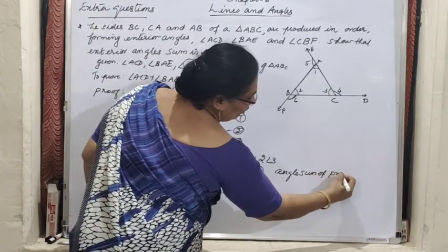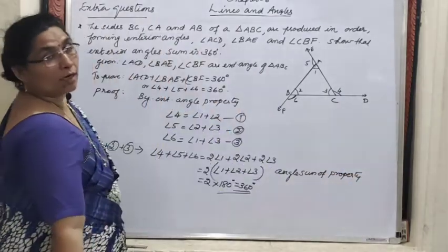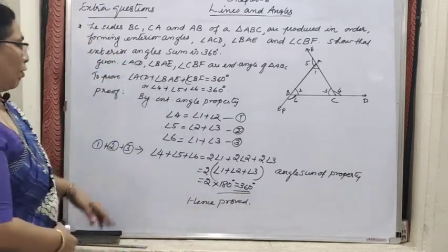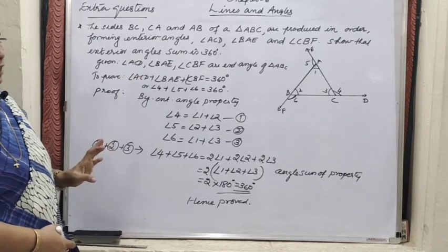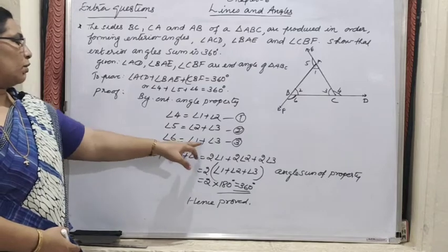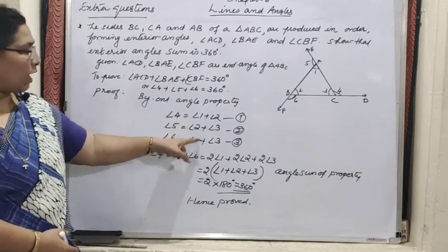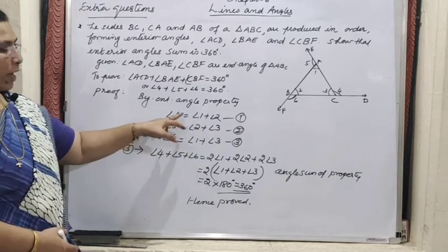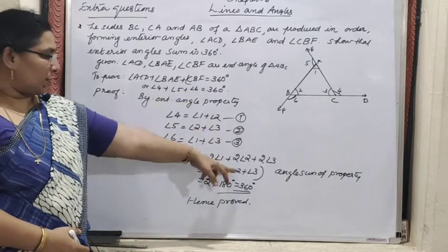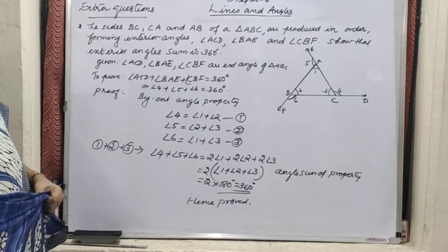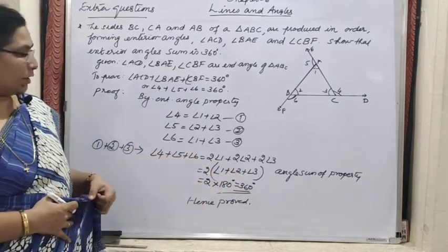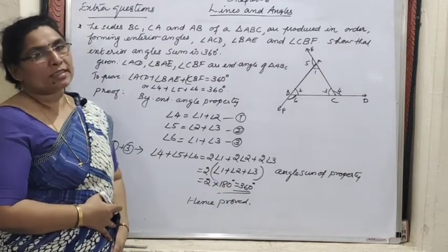We used exterior angle property and angle sum property. To repeat: angle 4 equals 1 plus 2, angle 5 equals 2 plus 3, angle 6 equals 1 plus 3. Adding the left sides gives 4 plus 5 plus 6. On the right side, angle 1, 2, and 3 each appear twice, giving 2 common factor times (1 plus 2 plus 3). Since angle 1 plus 2 plus 3 equals 180 degrees by angle sum property, the answer is 2 × 180 equals 360 degrees. Hence proved.